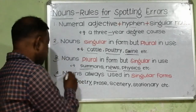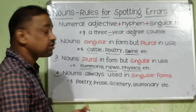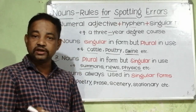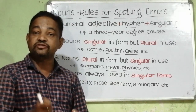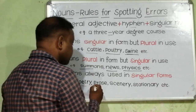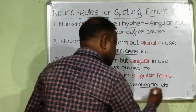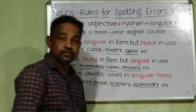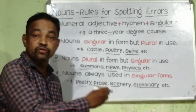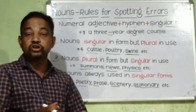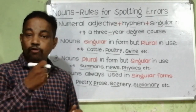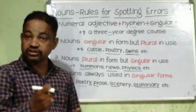Rule number four: nouns that always use singular forms — I am talking about uncountable nouns. They are always used in their singular forms. For example, poetry, prose, ciliary, stresonary, etc. Mind it, you cannot use 'a' or 'an' before these nouns. You cannot say 'a poetry' or 'a stresonary' — that's wrong. You have to say poetry, stresonary.